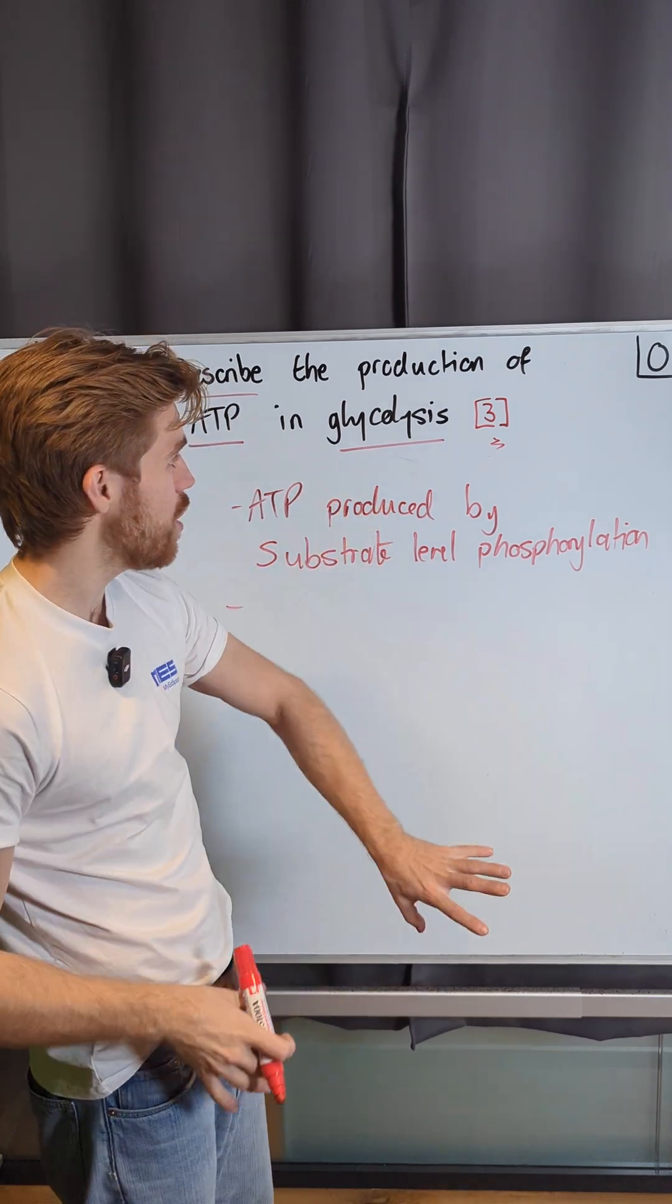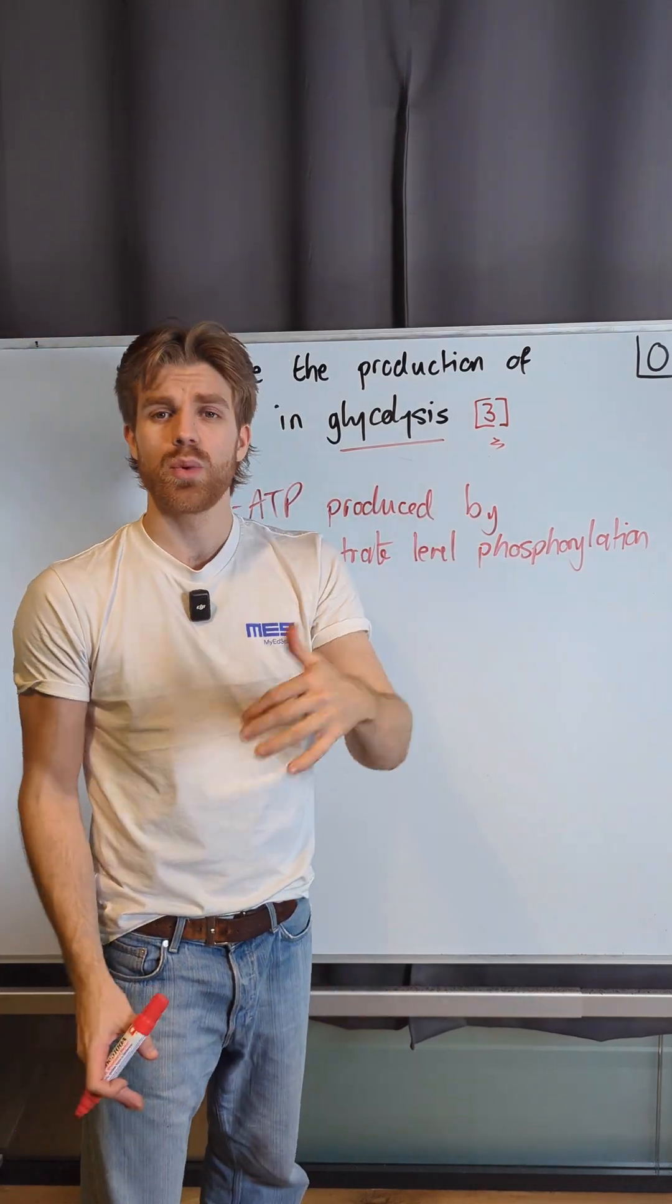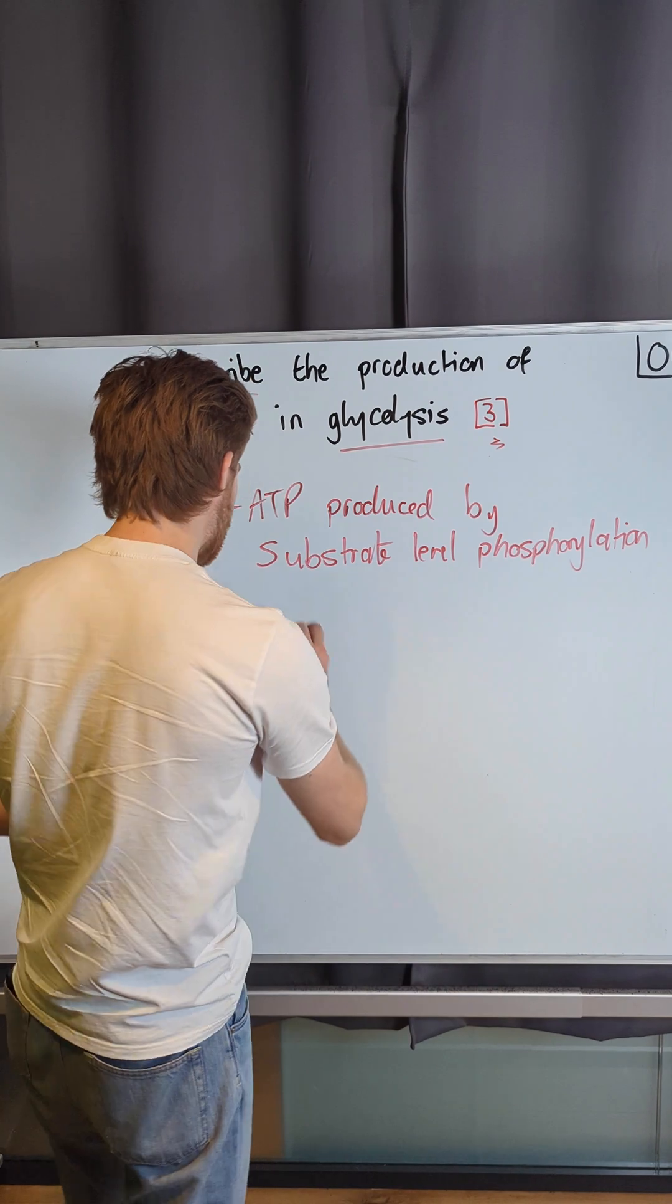And so how do we get the production of ATP? Our next two marks are going to come from saying, well, how much is produced? We get a net gain of 2 ATP.